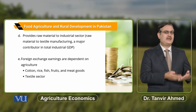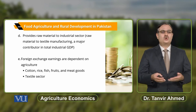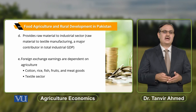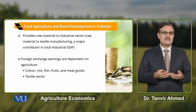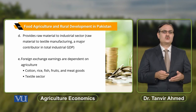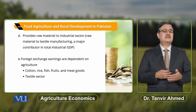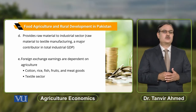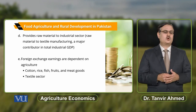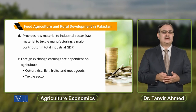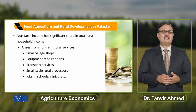The agricultural sector is also a source of foreign exchange earning. By exporting cotton, rice, fish, fruits and meat, Pakistan is earning foreign exchange. اور industrial sector میں جو textile sector ہے that is the major contributor in the exports of the economy of Pakistan — اور اس میں بھی cotton use ہو رہی ہے that is produced by the agricultural sector.